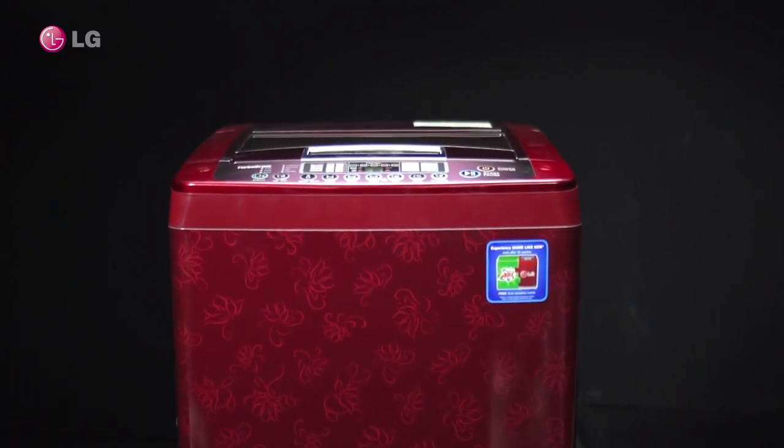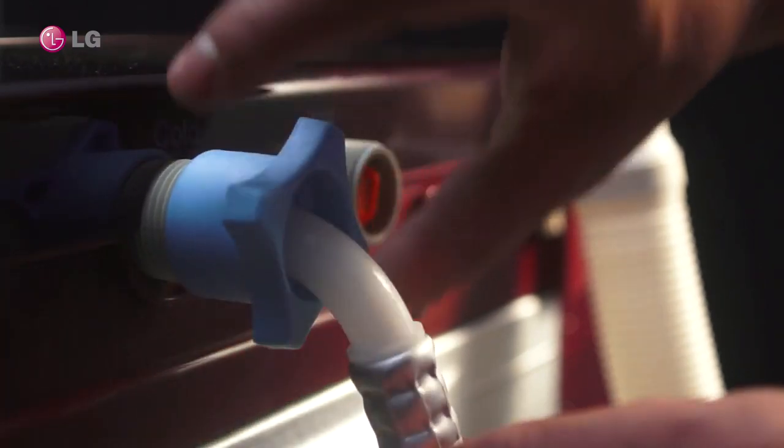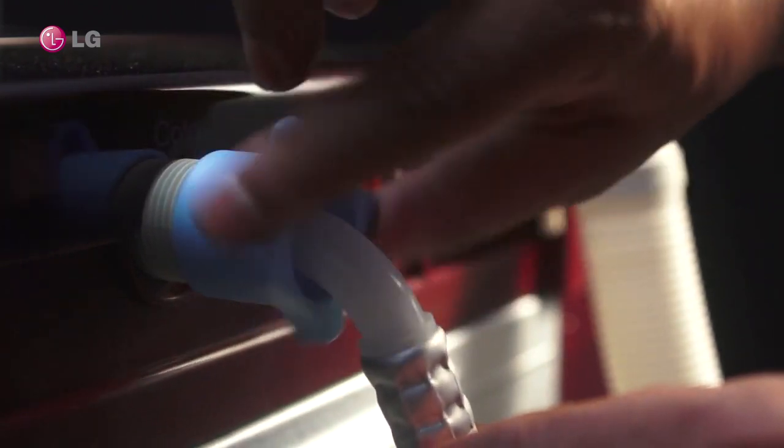In the rear end of the unit, locate the inlet hose connection. Hold firmly and rotate counterclockwise to disconnect the inlet hose from the unit.